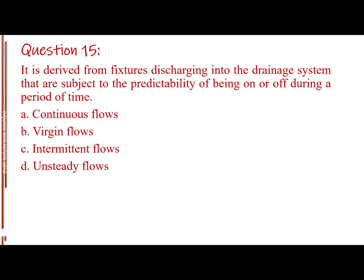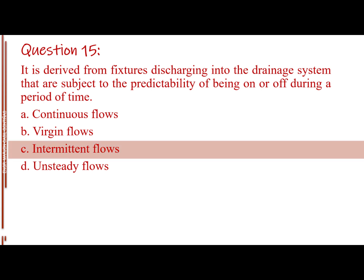Question number 15. It is derived from fixtures discharging into the drainage system that are subject to the predictability of being on or off during a period of time. Letter A, continuous flows. Letter B, virgin flows. Letter C, intermittent flows. Letter D, unsteady flows. The answer is Letter C, intermittent flows.